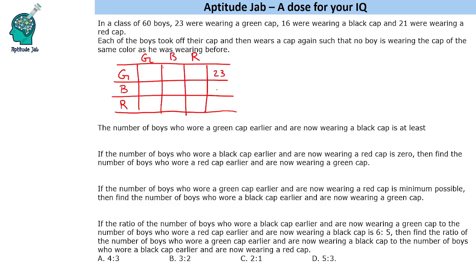Let us say there are n boys who were wearing a green cap and are now wearing a black cap. A green cap wearer cannot wear a green cap again. So the green-to-green cell is zero, and the green row total must be 23, making the green-to-red entry 23 minus n. We do the same totaling for columns as well. There were 21 red-cap wearers originally.